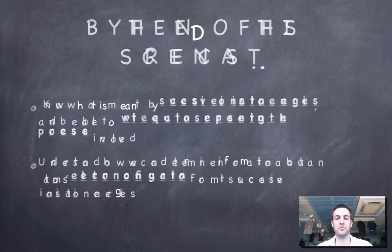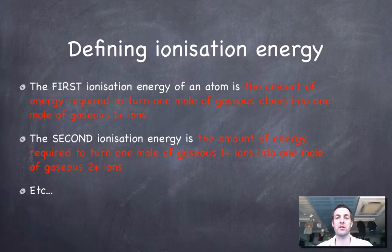Now first of all, let's look at some really important definitions. These are phrased in lots of different ways, depending on where you look at them, but it's important to know that the first ionization energy of an atom is the amount of energy required to turn one mole of gaseous atoms into one mole of gaseous one-plus ions.